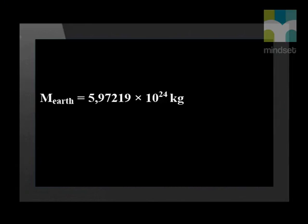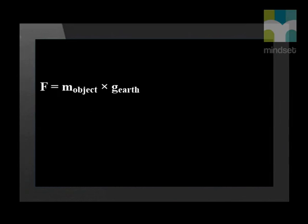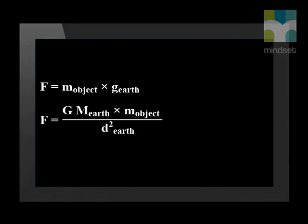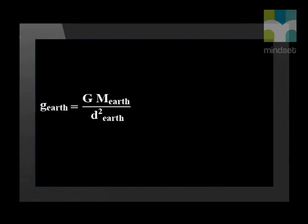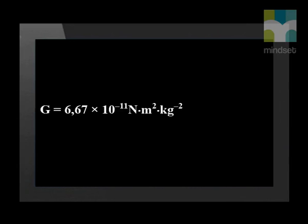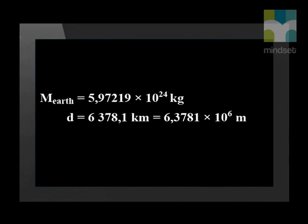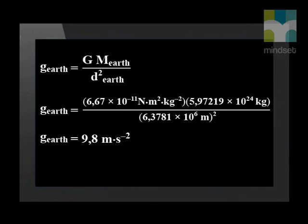Another calculation we can do is to calculate the gravitational acceleration on a planet if we have the planet's mass and radius. The mass of the earth is about 6 × 10²⁴ kilograms and the distance from the center of the earth is over 6,000 kilometers. We know the force due to gravity equals mass times gravitational acceleration, and using Newton's law of universal gravitation we can combine these. Cancelling the mass of the object from both sides and substituting the values, including G the universal gravitational constant, we find a gravitational acceleration of 9.8 meters per second squared, as expected.